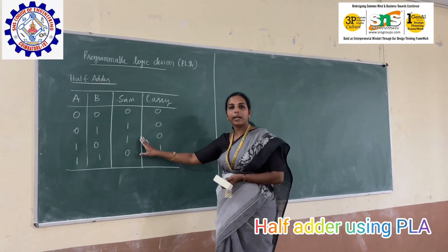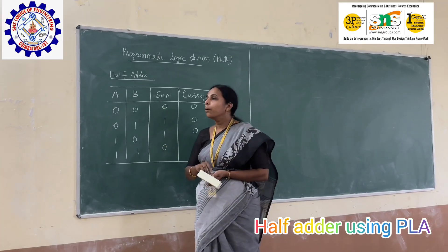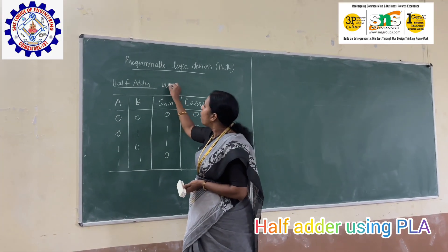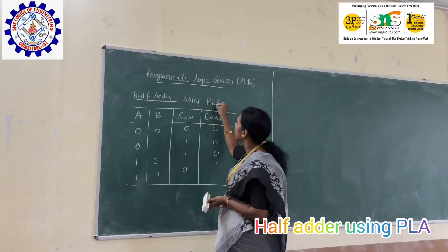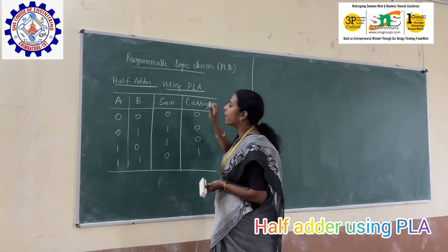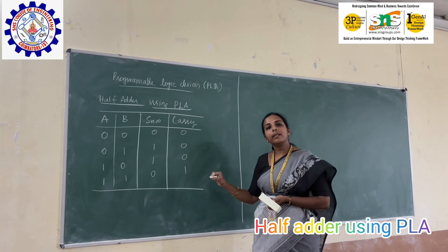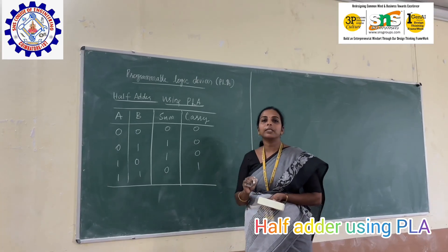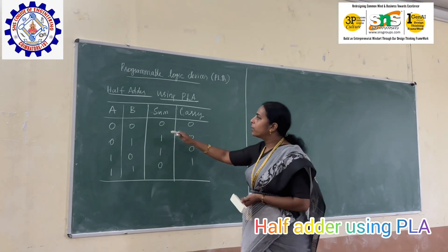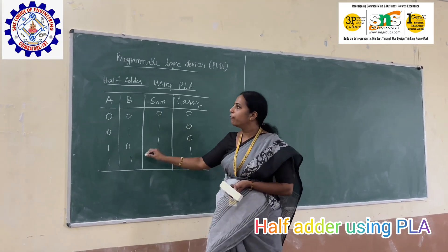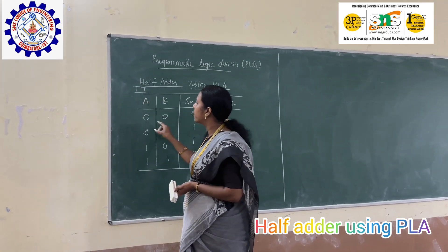Now let us design a half adder circuit using PLA. In the case of PLA, both AND and OR are programmable. To design any circuit, the first step is we need a Boolean expression. So this is the truth table for a half adder.